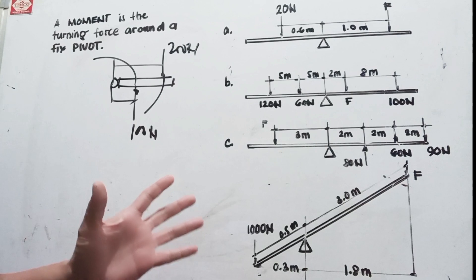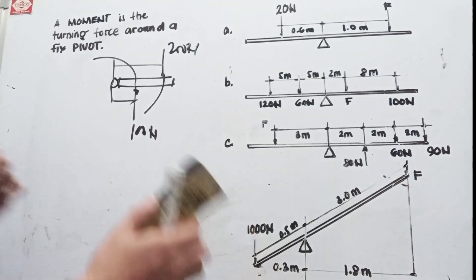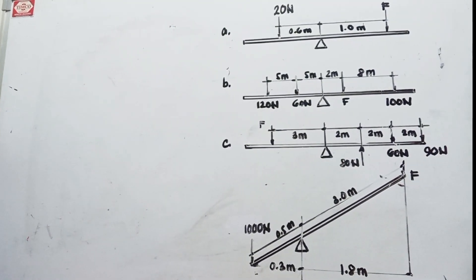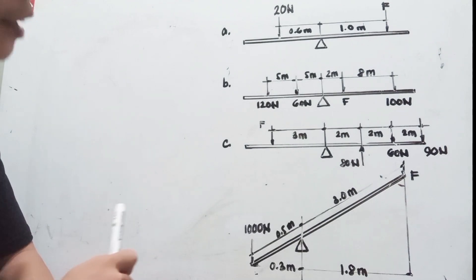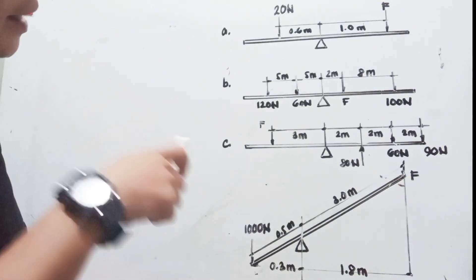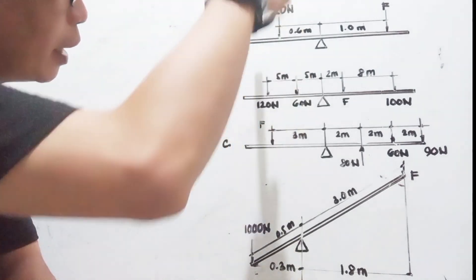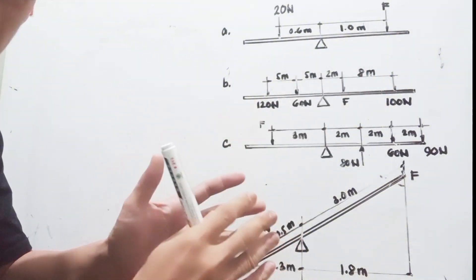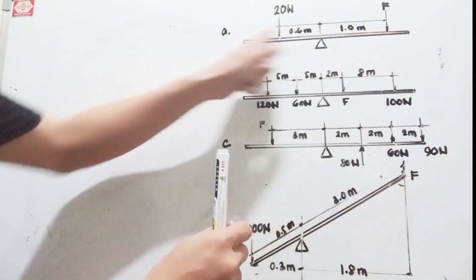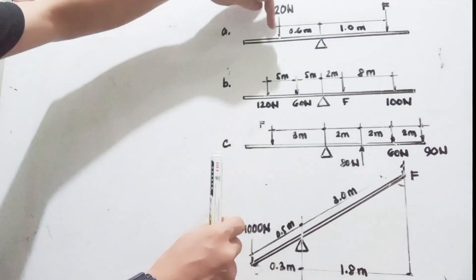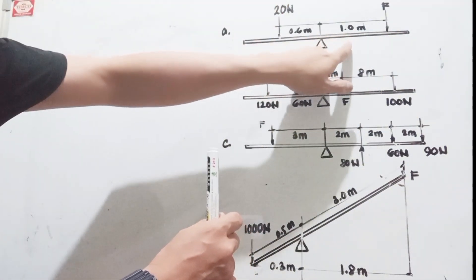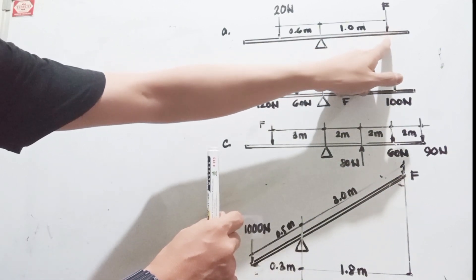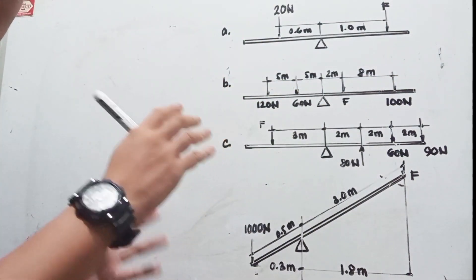The illustrations are quite small but you could enlarge them. So let's start. Given: a fulcrum, 20 Newtons going downward, and a distance of 1 meter. We're looking for the force at 1 meter from the center, given that 20 Newtons is at 0.6 meters. What value of force is needed here for the system to be in equilibrium?